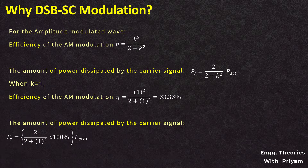The power dissipated by the carrier signal PC divided by total power PST equals 2/(2+1) × 100%, which simplifies to 66%. So 66% of the total power is dissipated on the carrier signal, and the efficiency of amplitude modulation is only 33.33%. The carrier itself dissipates 66% of the total power but carries no information.